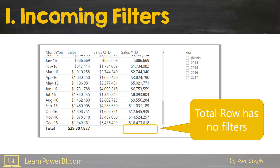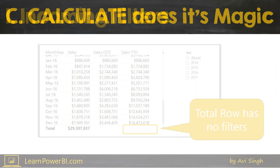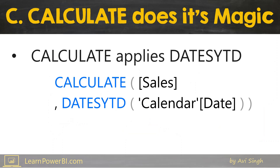On this cell, what are the incoming filters? Well, there are no filters. For the total row there are no filters being applied, so that's easy. Let's move on to the second step, which is "C" — so "I CAN" — "C" is for Calculate does its magic.